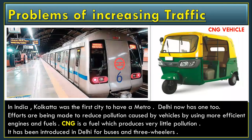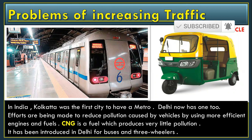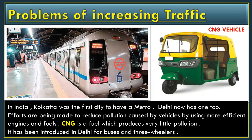In India, Kolkata was the first city to have a metro. Delhi now has one too. Efforts are being made to reduce pollution caused by vehicles by using more efficient engines and fuels. Aisi vehicles ko use kiya jana chahiye jismein efficient engine aur accha fuel use kiya gaya ho. CNG is a fuel which produces very little pollution. CNG ki wajah se kam pollution create hota hai. It has been introduced in Delhi for buses and three-wheelers.